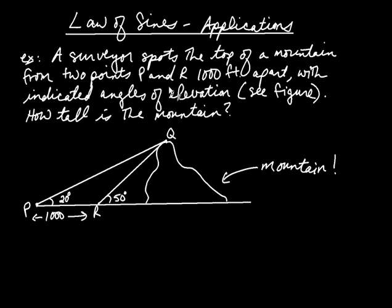a surveyor spots the top of a mountain from two points. And here's our mountain. Two points, P and R, and they are a thousand feet apart with indicated angles of elevation. So a 20-degree angle of elevation from point P and a 50-degree angle of elevation from point R. And the question is, how tall is the mountain?